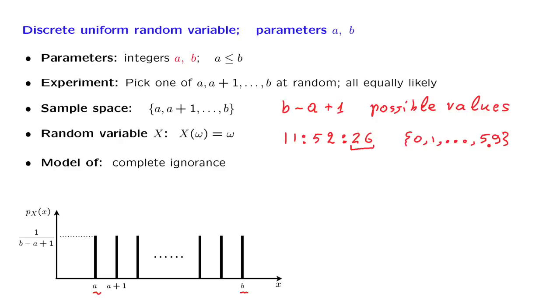One final comment. Let us look at a special case where the beginning and the end point of the range of possible values is the same, which means that our random variable can only take one value, namely, that particular number a.